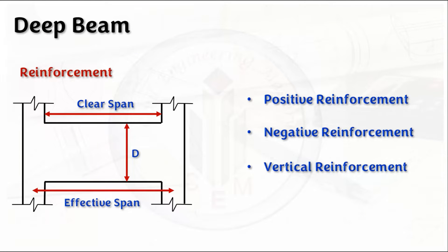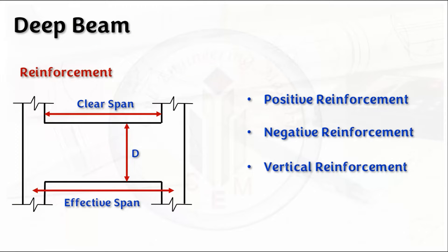Deep beams have more depth, and we need to understand up to what distance we provide positive reinforcement and what distance we provide negative reinforcement. These criteria need to be understood clearly before design and detailing of deep beams. In addition, we should know about effective span and clear span. The effective span is the center-to-center distance between supports, whereas the clear span is the clear distance between supports. Both will be used in the reinforcement calculations discussed later.